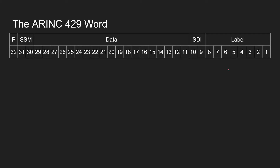Here is our ARINC-429 word. You can see we have 32 bits labeled on this page from right to left. Bit 1 is the first one sent, and bit 32 is the last bit sent.